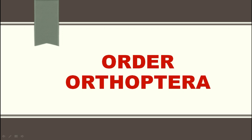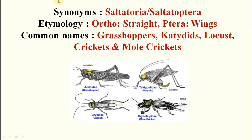The next order is Orthoptera. Examples include grasshopper, katydids, cricket, and mole cricket. The synonyms are Saltatoria or Saltatoptera. Etymology: 'ortho' means straight and 'ptera' means wings. Common names include grasshopper, katydids, locust, crickets, and mole crickets.